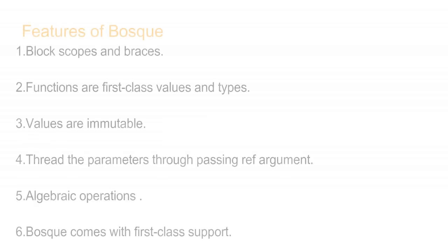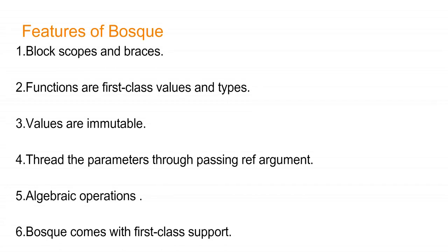The first feature is block scope and braces — functional programming is combined with block scope and braces by allowing multiple assignments to updatable variables. The second feature is that functions are first-class values, and types allow values to be immutable, making it easier to understand the effects of statements or blocks of code when they are side-effect free.